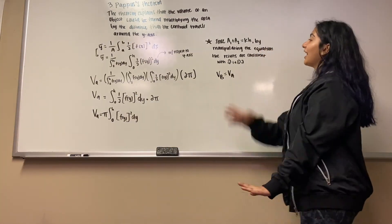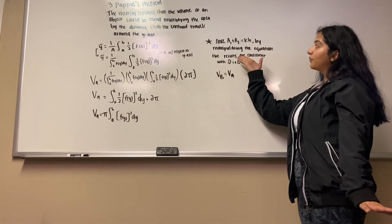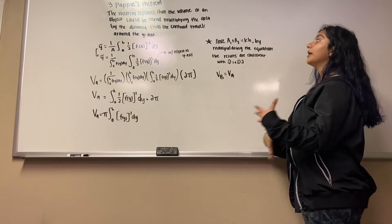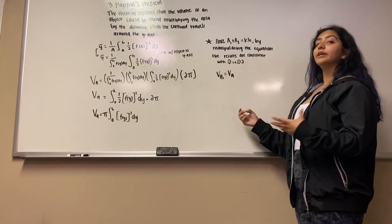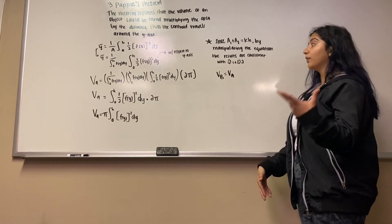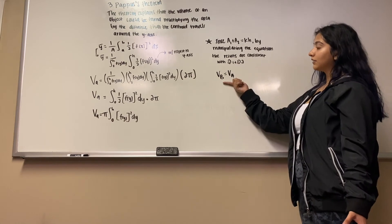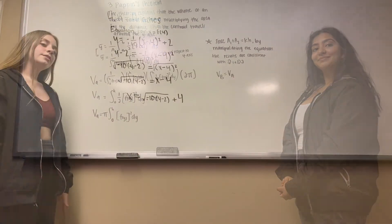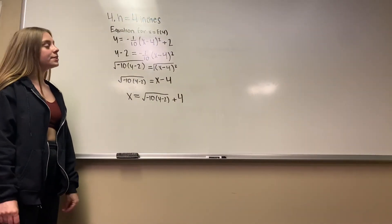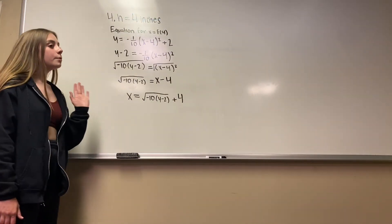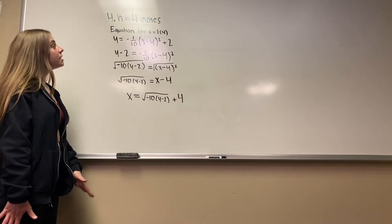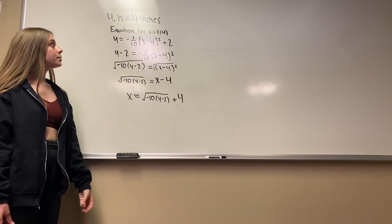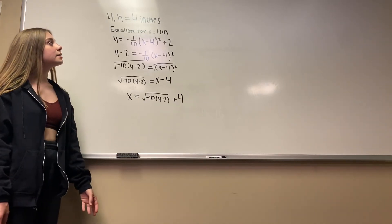We knew that the area of cup 1 plus the area of cup 2 equals k·H, so manipulating the equations produces results consistent with questions 1 and 2, confirming that the volume of cup B equals the volume of cup A. For question 4, the first step was to find H. We took a standard coffee cup and measured it, getting H equals 4 inches. The next step was to find the equation for x equals f(y).